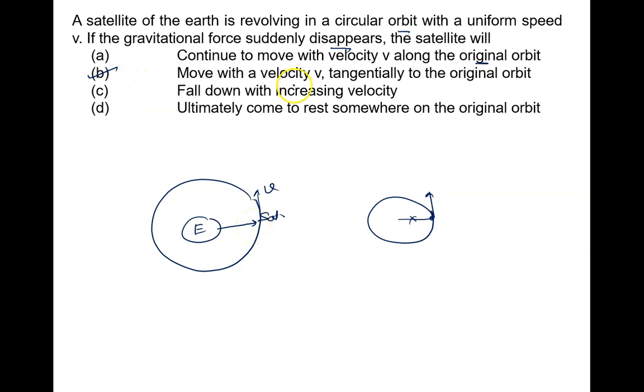Fall down with increasing velocity? No, it will not fall down, it will move. Ultimately come to rest somewhere on the original orbit? No, it will not remain at the original orbit. So we will say the right answer of the problem is option b. It will move with velocity v tangential to the original orbit.